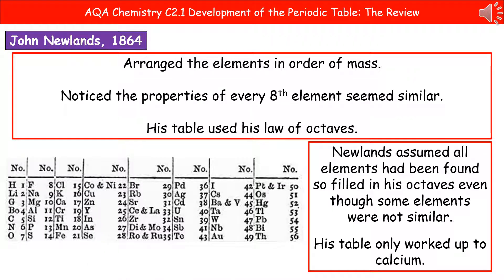The second scientist we need to know about comes around in 1864, which is John Newlands. He arranged the elements in order of their mass, and he noticed that the properties of every eighth element seemed similar. So what he devised was this thing called the law of octaves — he put them into these groups of eight, as you can see in the table below. The big problem with Newlands' idea was that he assumed all elements had been found, so where he had gaps in those octaves, he just filled them in with elements he already had, even though they weren't actually that similar. That meant his table only worked up to calcium.